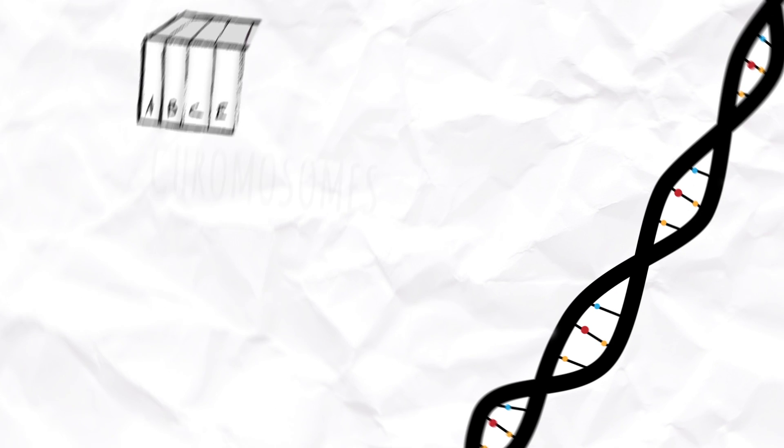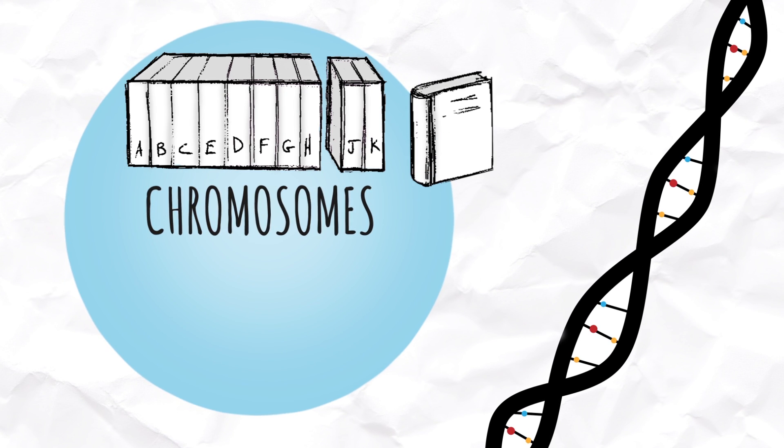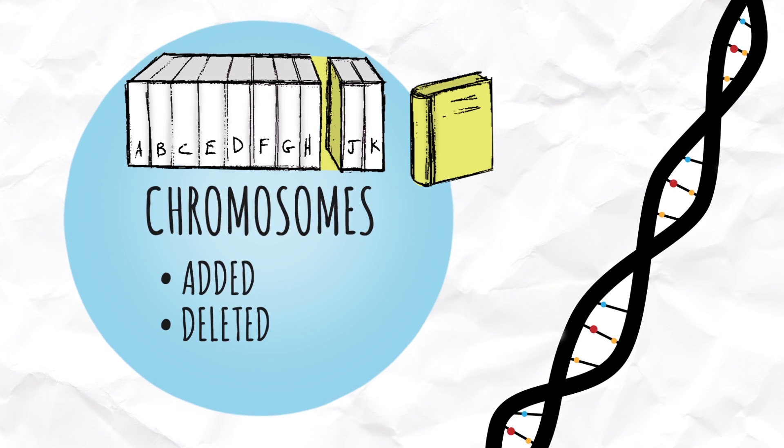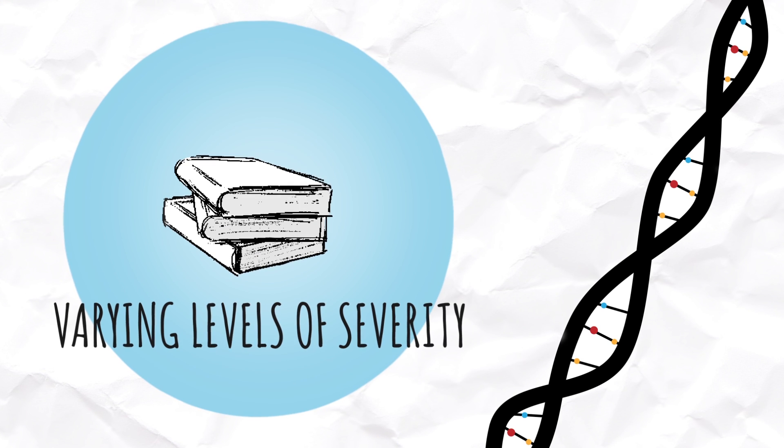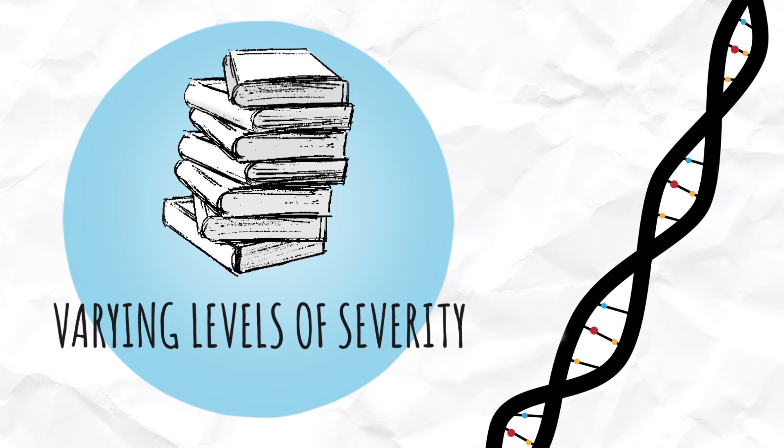Our chromosomes are like these books in the encyclopedia set. If one is added, deleted, or out of place, it may cause disruptions in the reference information. The severity of this disruption may depend on how much information is changed as a whole.